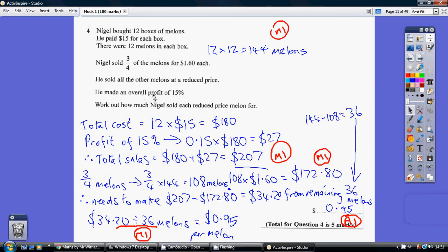Now our total cost is we bought 12 boxes and each box costs $15, so that's $180 we paid for all the melons. 12 boxes, $15 per box. So our profit needs to be 15% of this $180. 0.15 times $180 is $27. So we need to make a profit of $27.